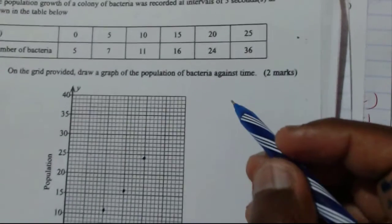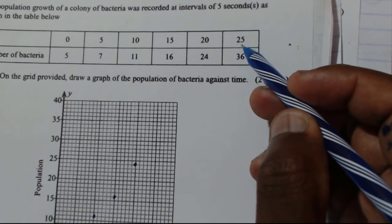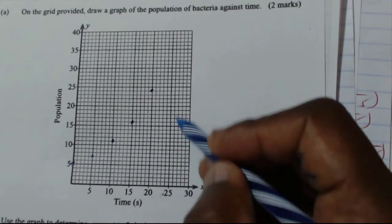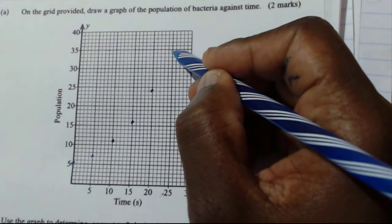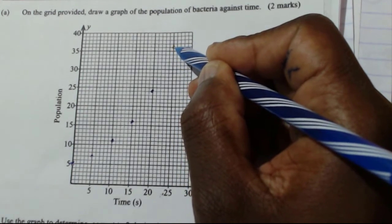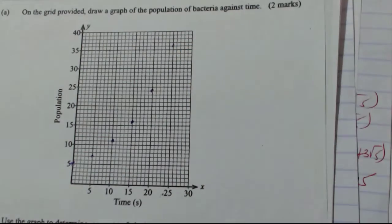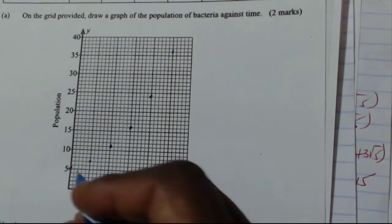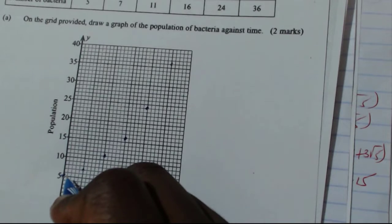Then the last one is 25, 36. This is 25, 36. So that is what you're supposed to do. So we join this one using a smooth curve.